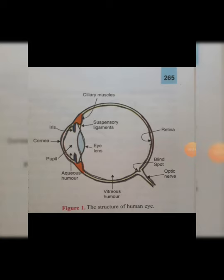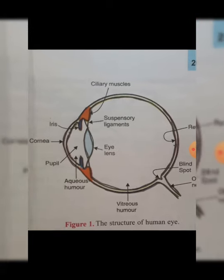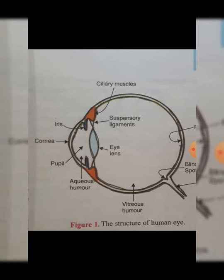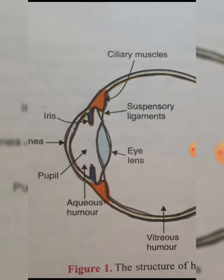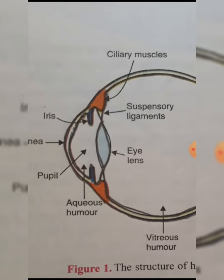In the previous lecture we discussed about the construction of the eye. Now we'll discuss about the working of the eye. The light rays coming from the object placed in front of us enter the cornea of the eye.